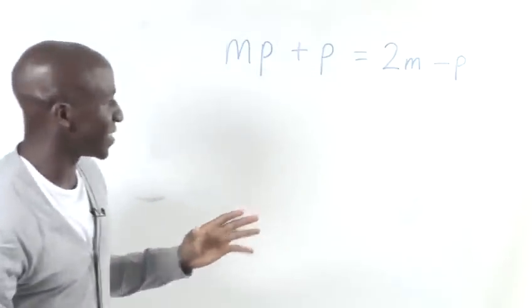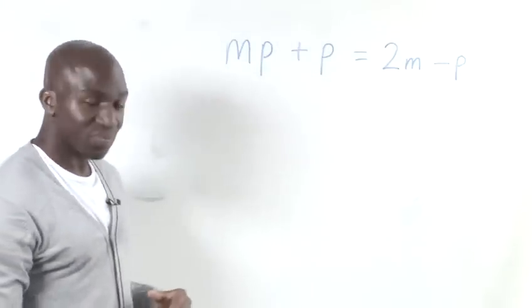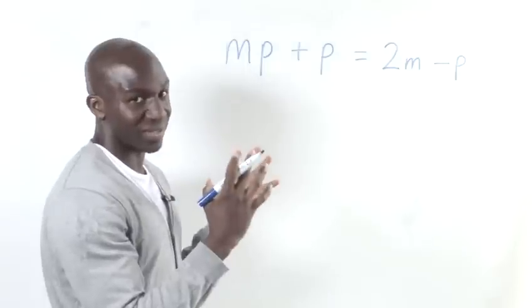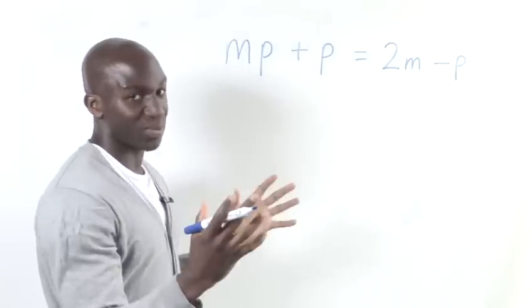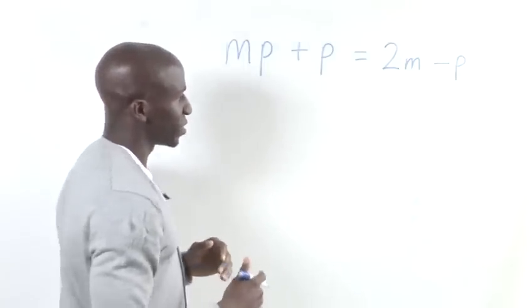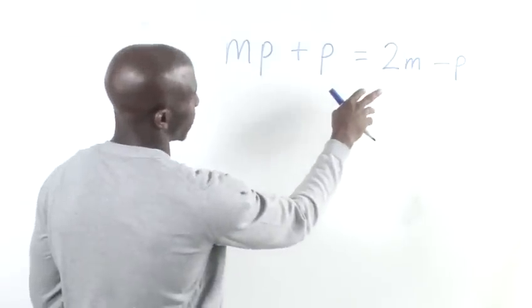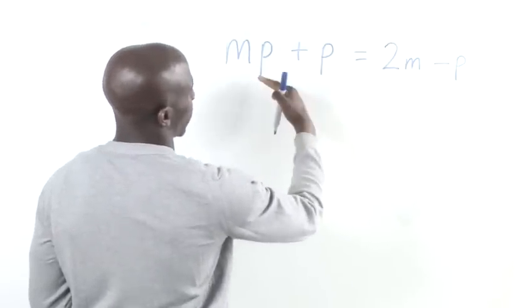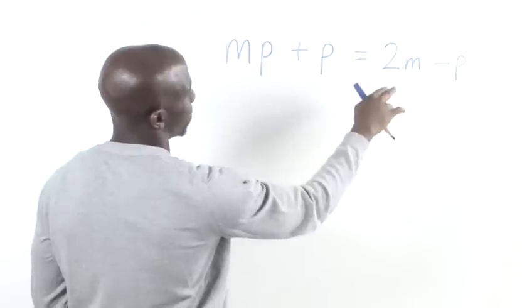So what we want to do is simplify this. Now, the way to simplify this is to bring all the P's together and all the M's together and see what we're left with. The first thing I would do is bring the P's over on one side and then the M's on the other.